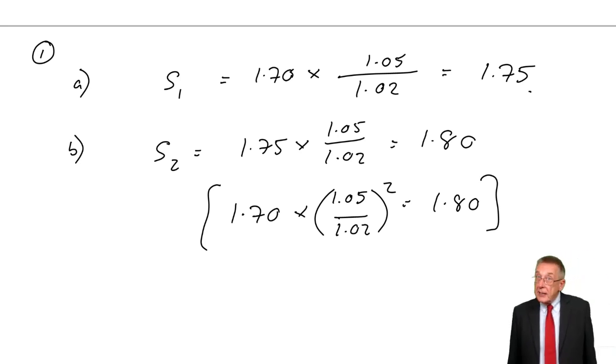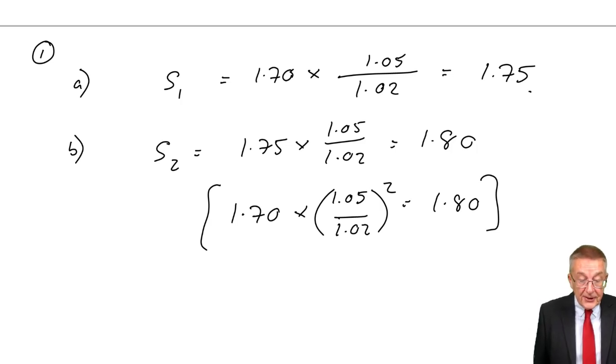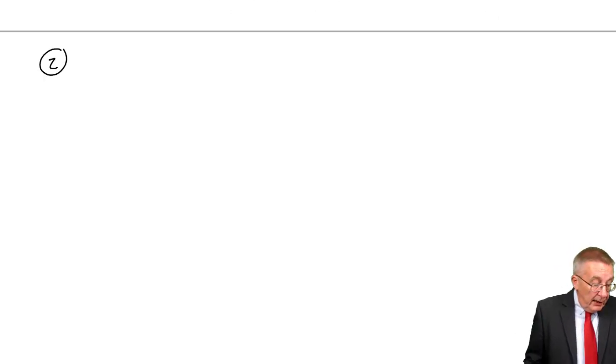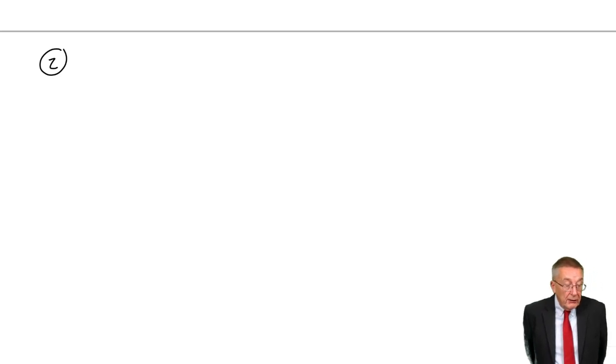All right, one more, although I do think it would be an idea to pause the lecture and try the second example yourself, and then start the lecture again and check that I've got it right. The second one, this time it's the yen against the pound. Currently, 2,030 yen are equal to one pound. What will it be in one year and two years?